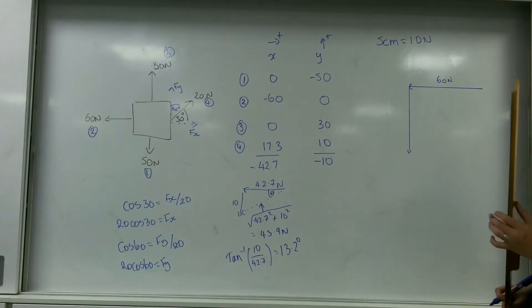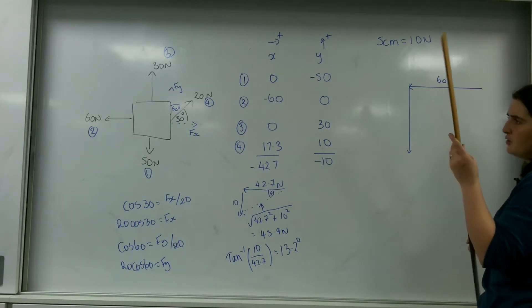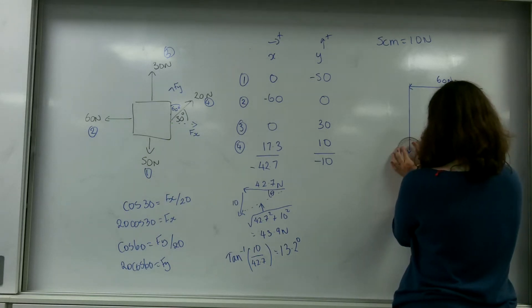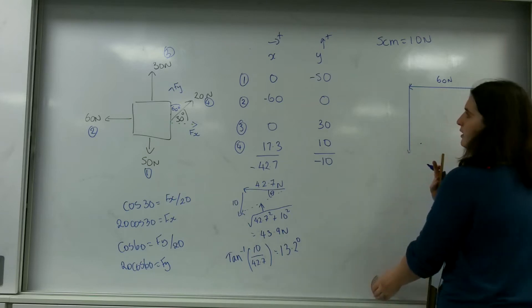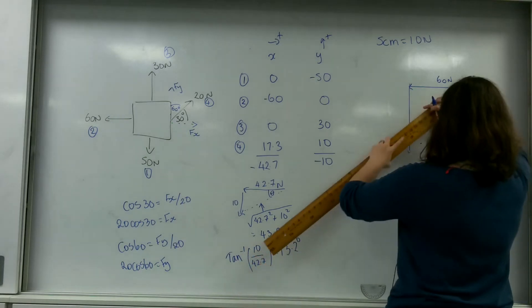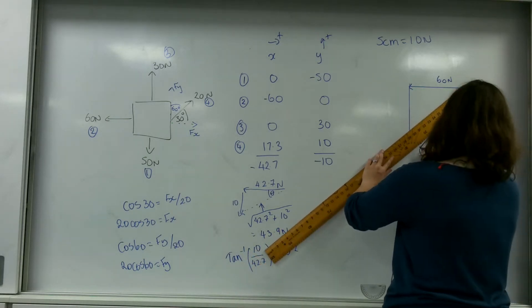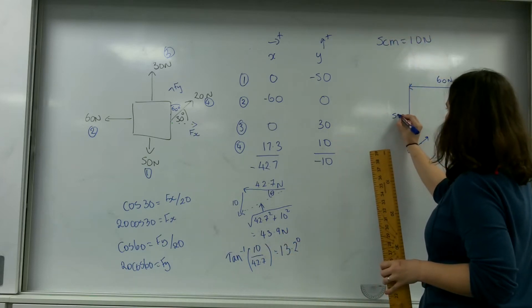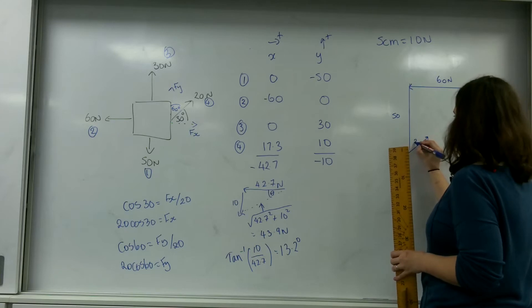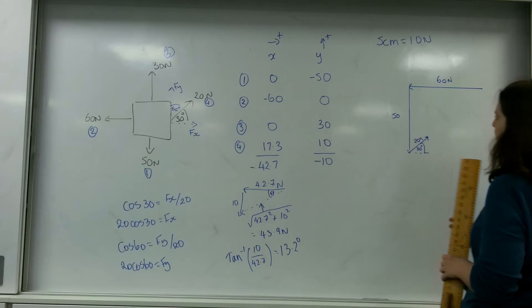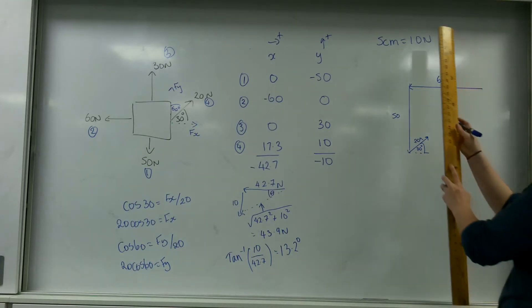I'm then going to do my 20 newtons, 30 degrees this way. So I've marked out my 30. I'm going to do 10 centimeters this way. So that's my 50 newtons, this is my 20 newtons, and that's 30 degrees. And then I'm going to do my 30 newtons up, which would be 15 centimeters.